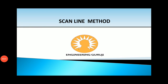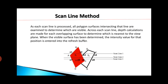Hello students, today we are going to learn the scan line method. This method is used for detecting visible surfaces of the polygon. In this method, we need to process the scan lines. Processing of scan lines means finding the intersection points of scan lines with polygon edges.